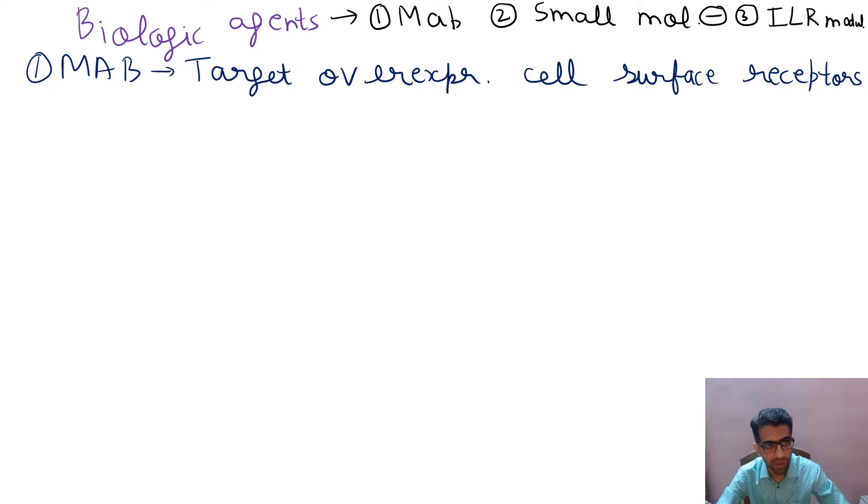Now talking about some examples, like if the suffix ends in ximab, xi means it's chimeric. Chimeric means it's a combination of human and mouse. So ximab is chimeric human mouse monoclonal antibody. For example, rituximab.